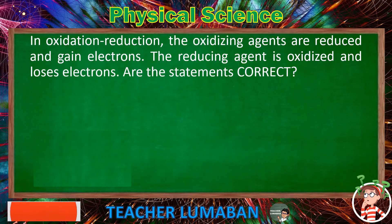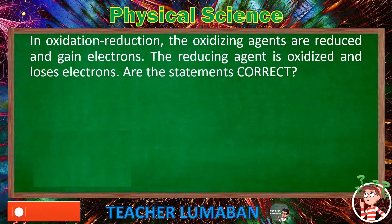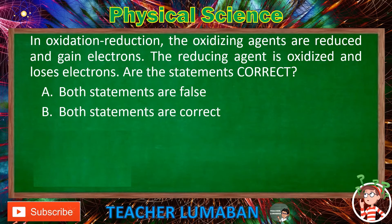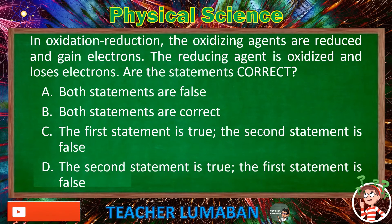In oxidation-reduction, the oxidizing agents are reduced and gain electrons. The reducing agent is oxidized and loses electrons. Are the statements correct? Letter A: Both statements are false. Letter B: Both statements are correct. Letter C: The first statement is true, the second statement is false. Letter D: The second statement is true, the first statement is false.